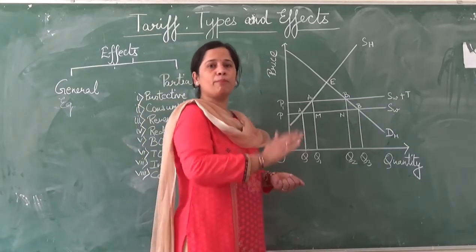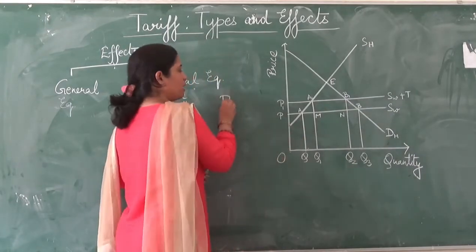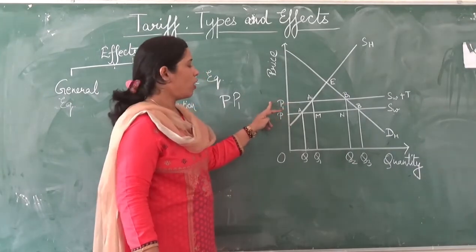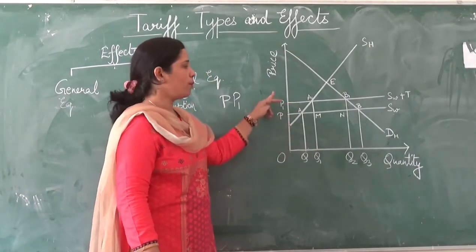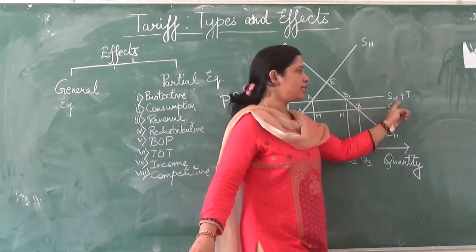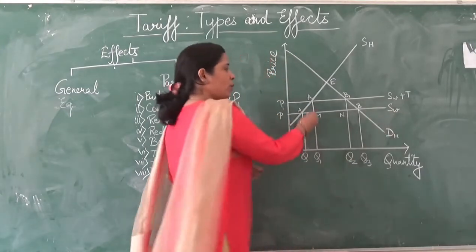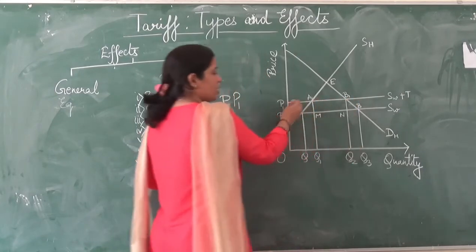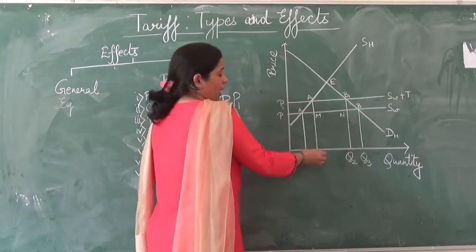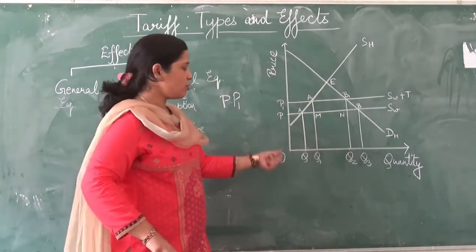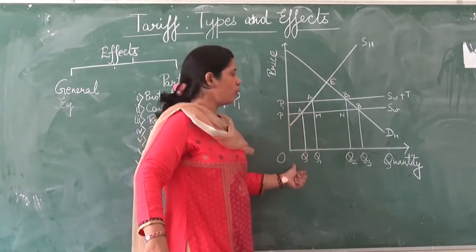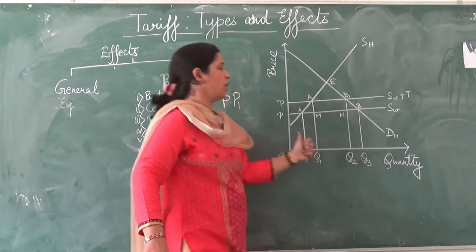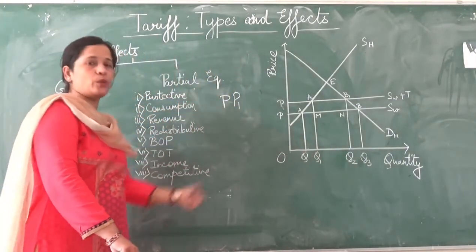Now the home country is imposing a tariff on a commodity at rate P to P1. So the supply curve shifts from P to P1 — that is, the price increases from OP to OP1. We now have a new supply curve P1, SW plus T, and the new equilibrium is at point B1. The quantity demanded is now OQ2 while domestic supply is OQ1. With the imposition of a tariff, the price increases from OP to OP1 while imports decrease from QQ3 to Q1Q2.